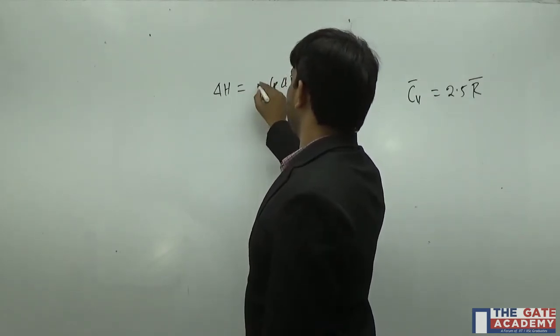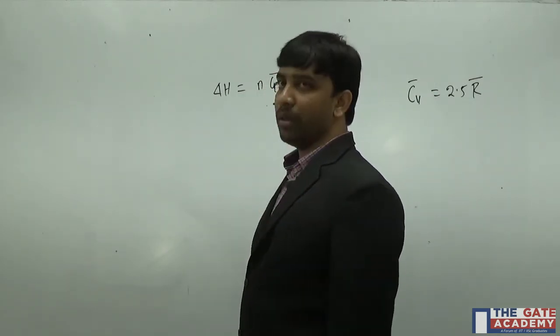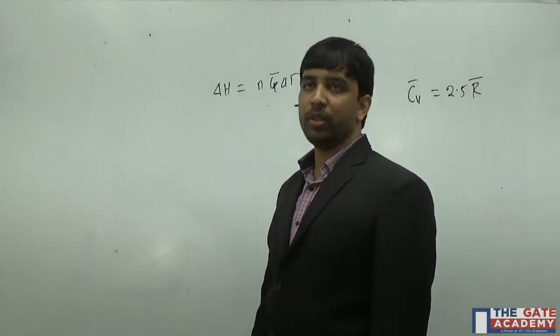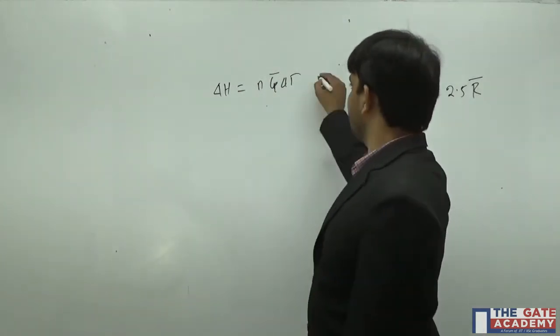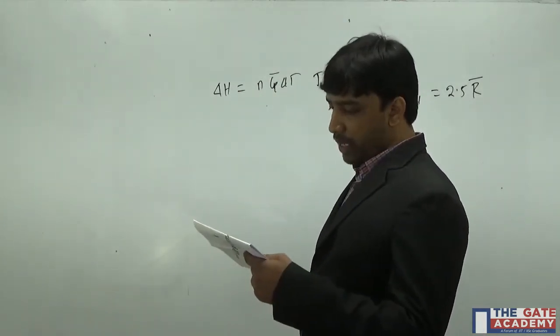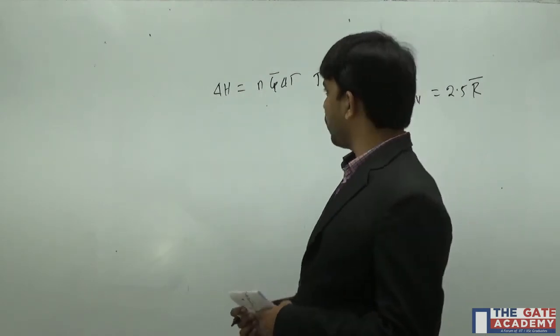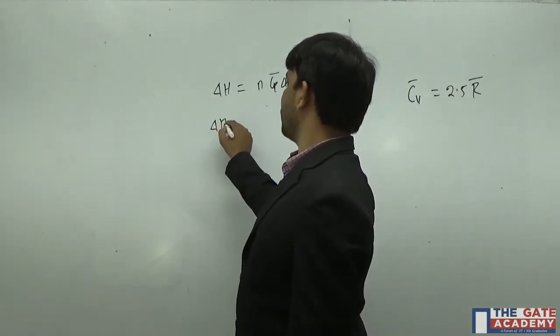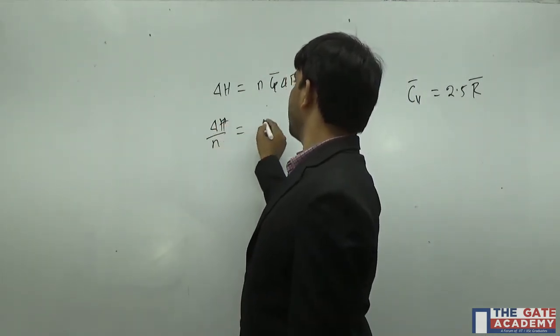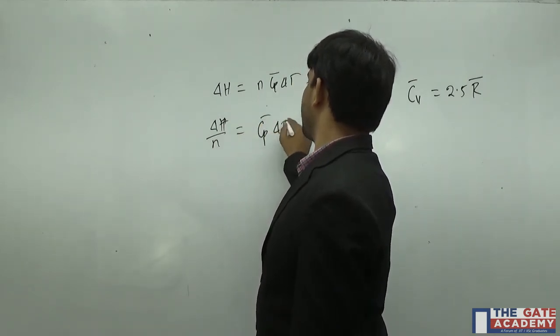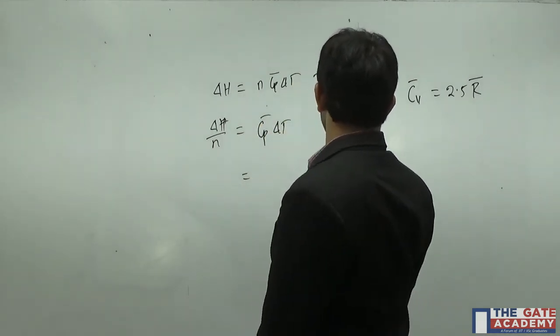If I write the same thing per mole, I can write molar specific heat times the number of moles. He's asking us to get the value of molar specific enthalpy. For one mole, ΔH is nothing but Cp bar times ΔT.